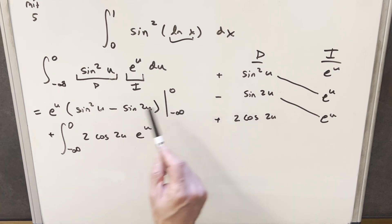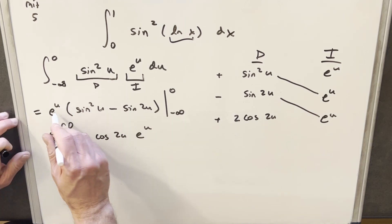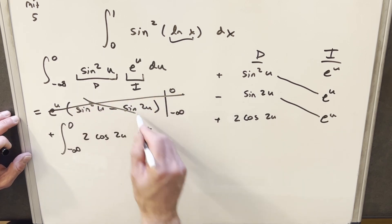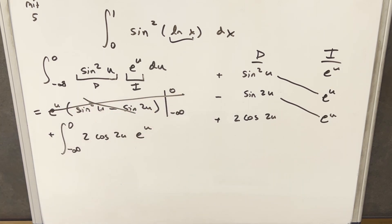Now let's look at what happens here before we do anything else. So when we plug a 0 in here, sine at 0 is 0. So this piece is 0, but sine of 2u is still 0. So the whole 0 part goes away. Then we plug minus infinity in. When we plug minus infinity into e here, this is going to 0 again. So we can ignore it. This whole part is going to 0.